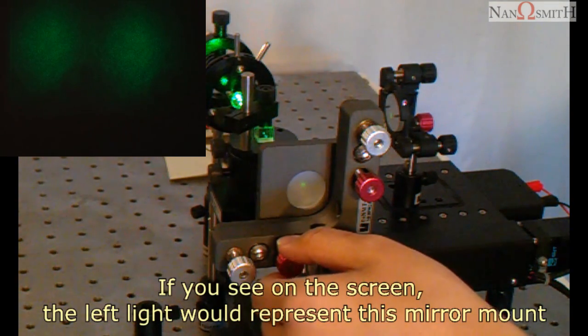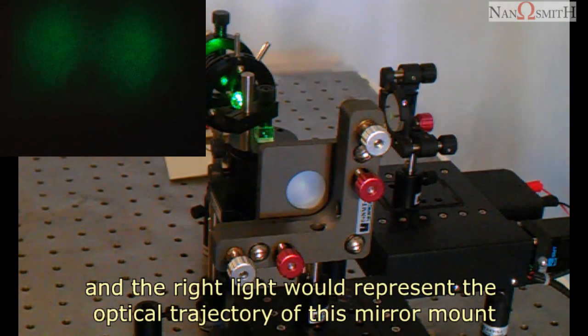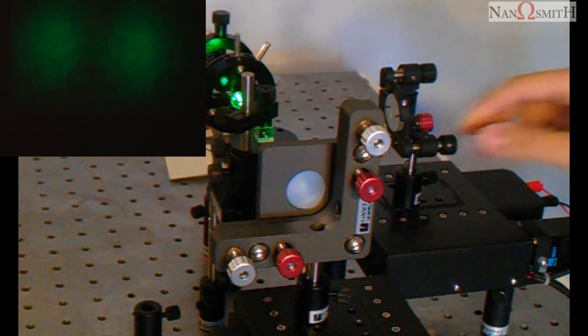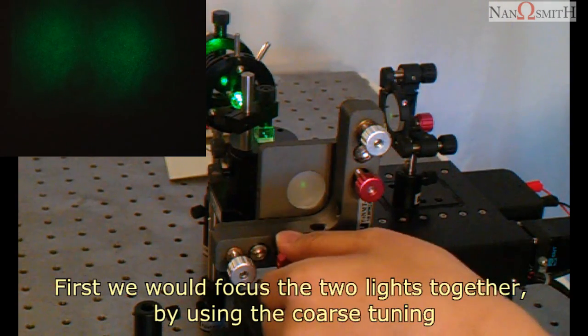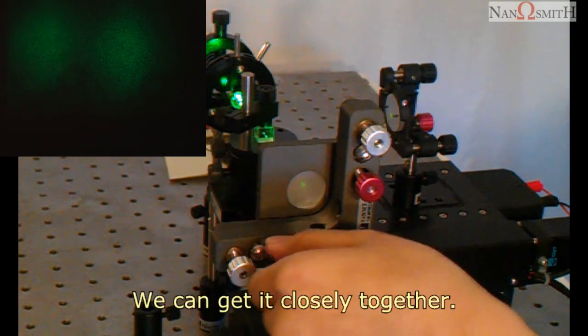If you see on the screen, the left light will represent this mirror mount, the light trajectory of this mirror mount, and the right light will represent the light trajectory of this mirror mount. First, we will focus the two lights together by using the coarse tuning. We can get it closely together.